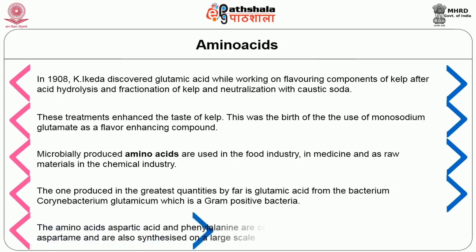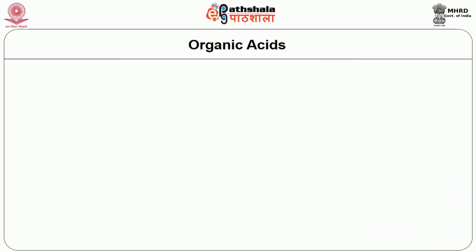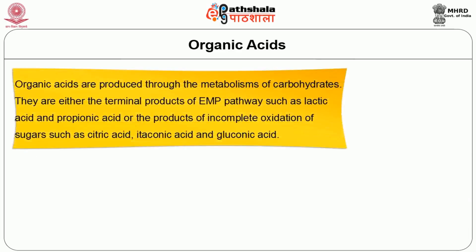The amino acids aspartic acid and phenylalanine are components of the artificial sweetener aspartame and are also synthesized on a large scale. Organic acids are produced through the metabolism of carbohydrates. They are either the terminal products of the EMP pathway such as lactic acid and propionic acid, or the products of incomplete oxidation of sugars such as citric acid, itaconic acid and gluconic acid.